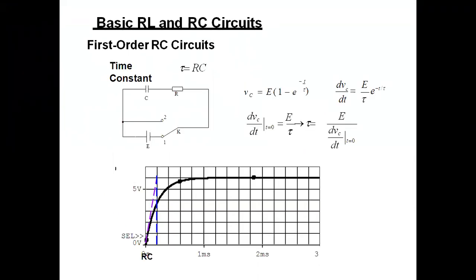Let us take the basic RL and RC circuit — the first order derivative. We have to find the time constant of the circuit. The voltage generated across the capacitor is given by Vc = E(1 − e^(−t/τ)). Taking the first order derivative, dVc/dt = (E/τ) · e^(−t/τ), where E is the applied voltage and τ = RC is the time constant of the RC circuit. When the switch is closed at position 1, completing the circuit, the voltage across the capacitor equals E(1 − e^(−t/τ)), and the derivative at t = 0 gives E/τ.